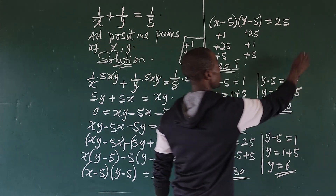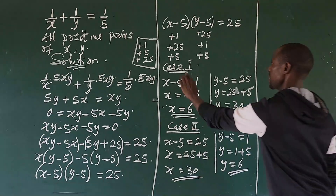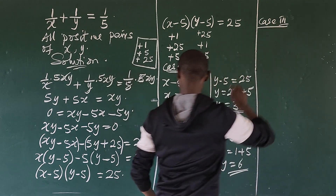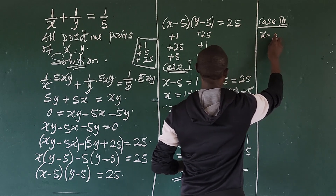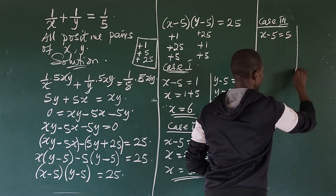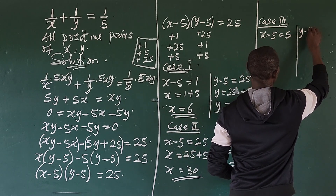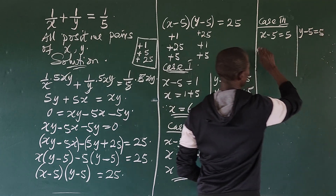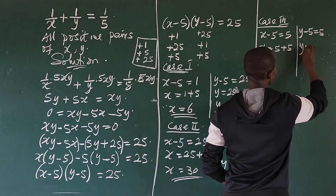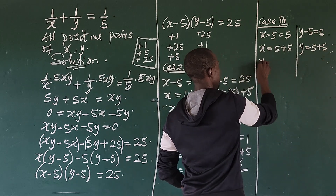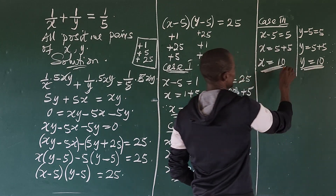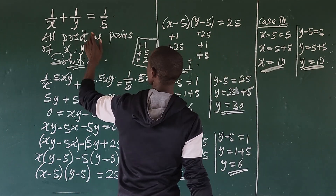For Case 3: (x minus 5) equals 5 and (y minus 5) equals 5. So x equals 5 plus 5, giving x equals 10, and y equals 5 plus 5, giving y equals 10.